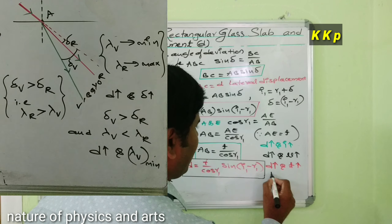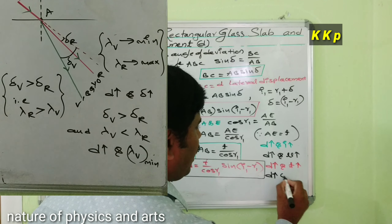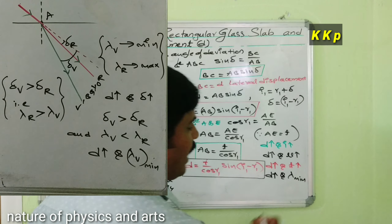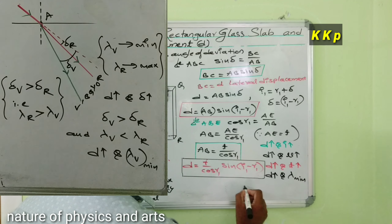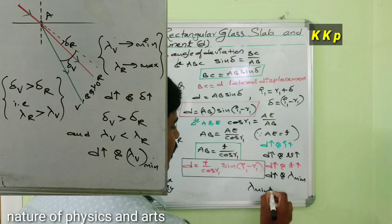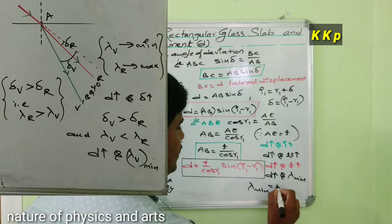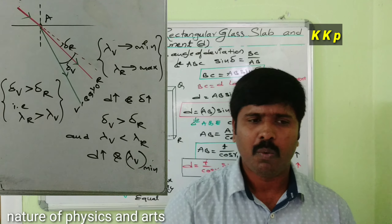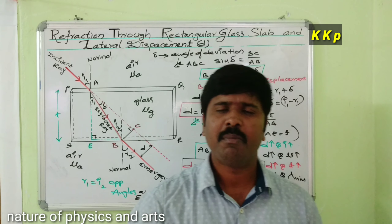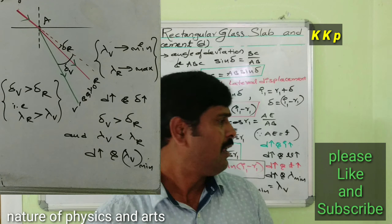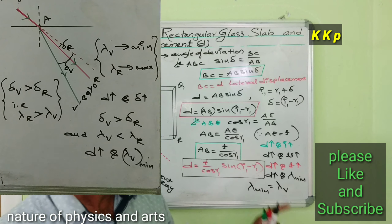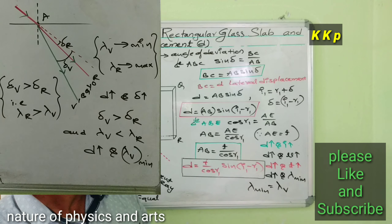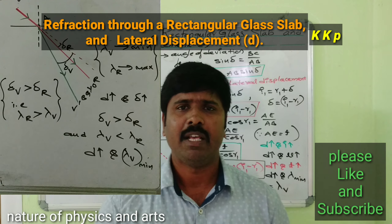The lateral displacement value increases with decreasing wavelength. The minimum wavelength, lambda_min, corresponds to violet light. Violet color has the minimum wavelength, so violet color gets the maximum lateral displacement.